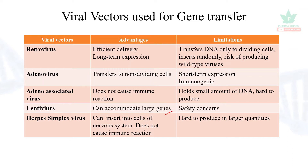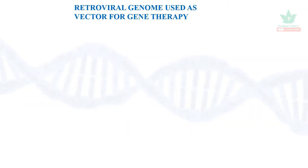Some viruses don't cause immune reactions while others are immunogenic, so every virus has its advantages and disadvantages. The herpes simplex virus is used for the nervous system, and the lentivirus can accommodate large kilobases of genes. The retroviral genome is used as a vector for gene therapy.